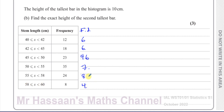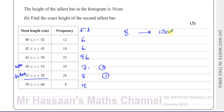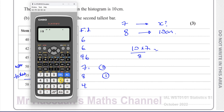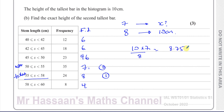The highest bar is the 55–58 class and the second highest is the 50–55 class. The frequency density of 8 is represented by 10 centimetres. We want to know how many centimetres represents a frequency density of 7. Using proportion: 10 × 7 ÷ 8 = 35 ÷ 4 = 8.75 centimetres. So there's the exact height of the second tallest bar.